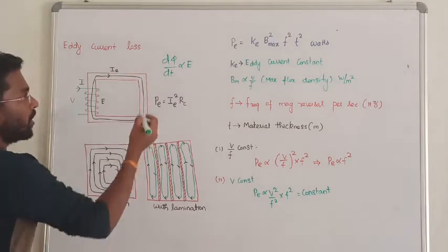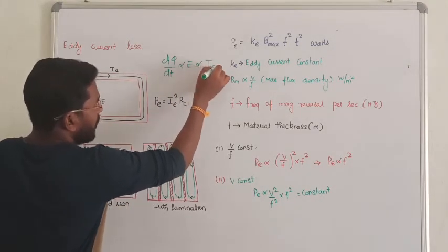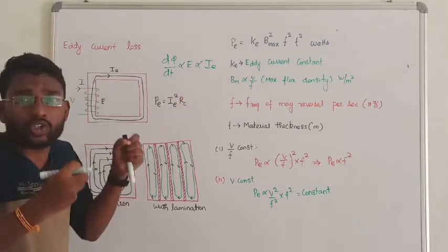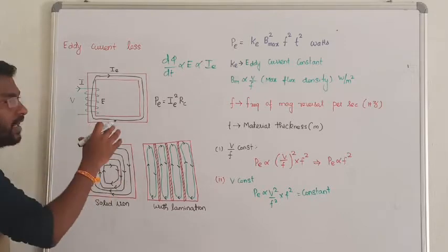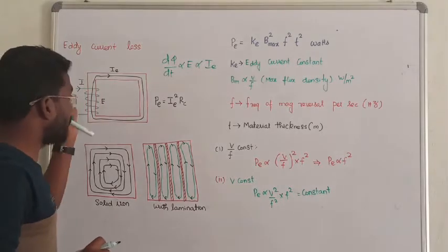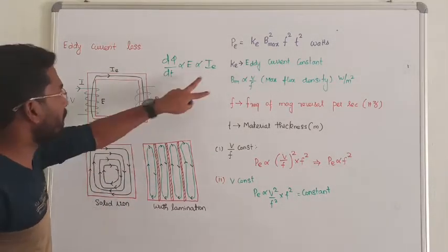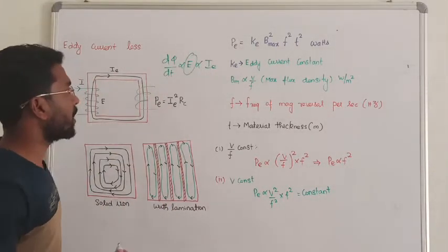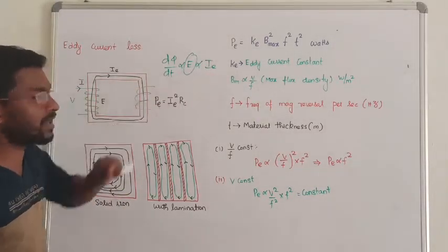Induced EMF will be responsible. It will produce some eddy current in your core. Induced EMF, that is called electromagnetic force. This electromagnetic force will drive some current unnecessary inside of the core. Due to this induced EMF, there will be eddy current. The eddy current in the iron, it started circulating inside the core. That is called eddy current loss.